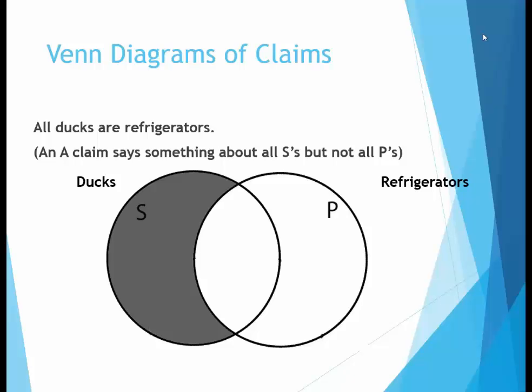Notice that the A claim says something about all of the subject. In this example, it says all ducks have the characteristic indicated by the predicate — in this case, refrigerators. But it doesn't say anything about all refrigerators, just all ducks. We'll explore this property of the A claim later, when we analyze how claims form arguments.